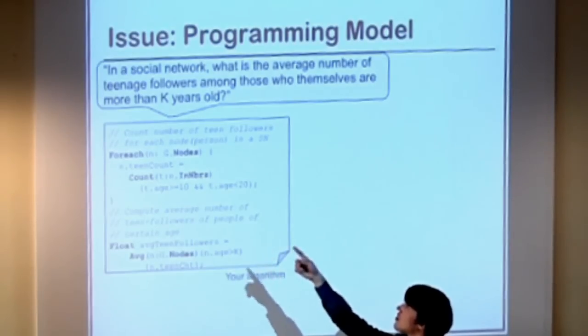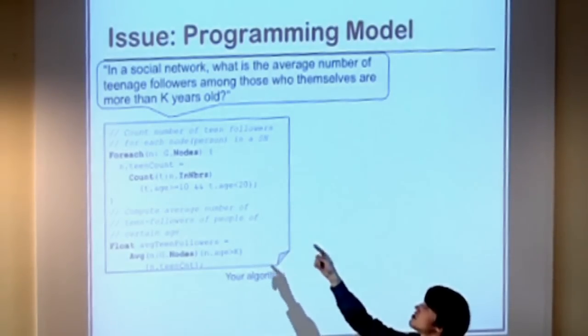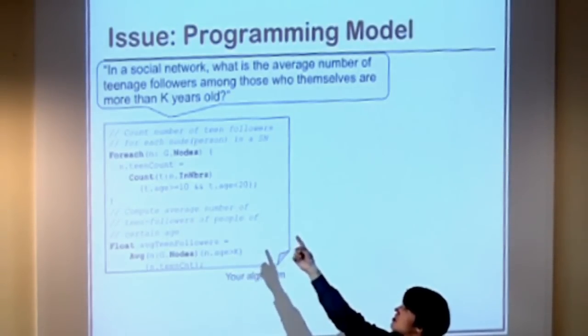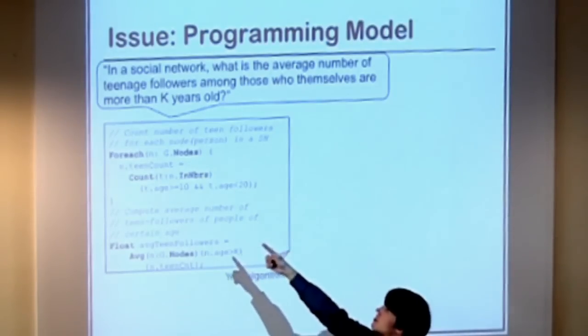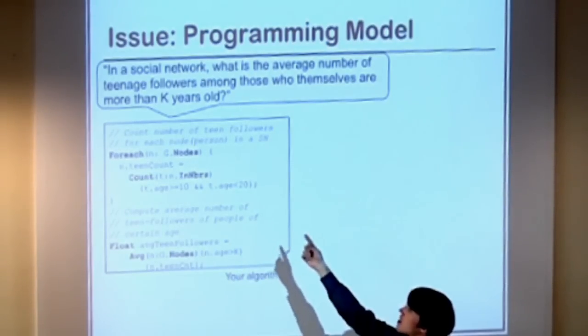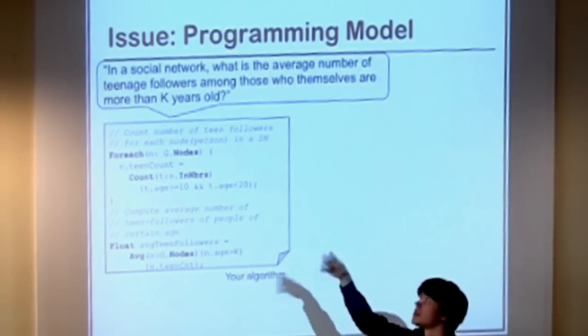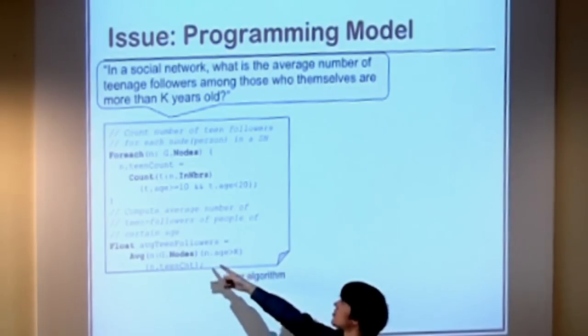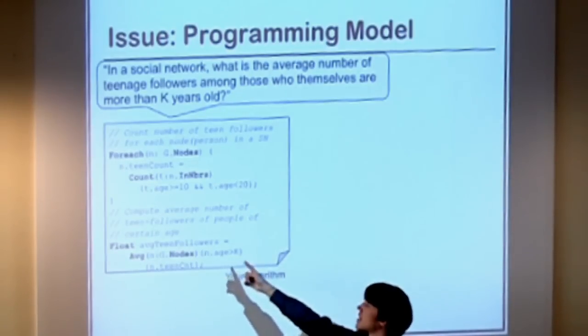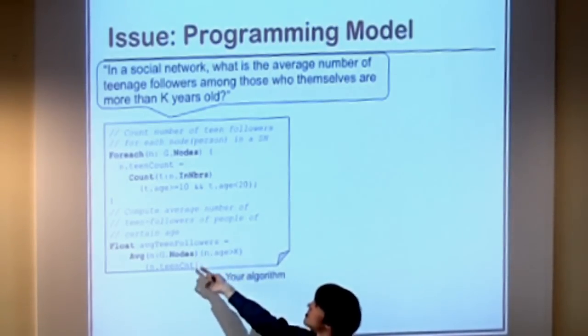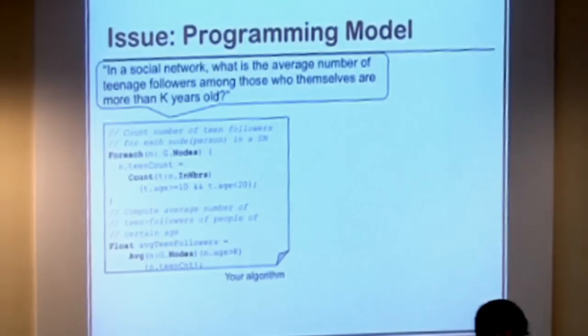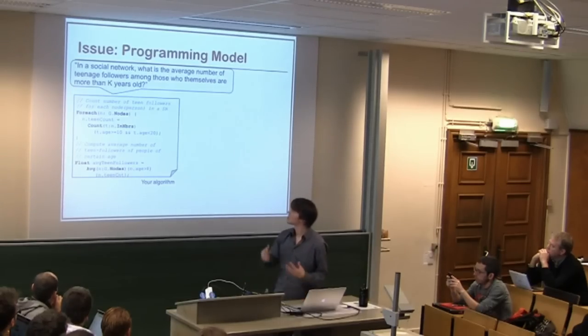So you could, in a pseudocode-like fashion, this is actually Green Marl code, you would write it like this. So you have a for each loop over all the nodes. For every node, you initialize a variable called the teen count. And you count the number of neighbors whose age is bigger or equal than 10 and smaller than 20. Then when all the nodes have this variable initialized, you take the average. For all the nodes that have an age bigger than k, you average their teen count. And you store that into another variable. Then you have the average age.